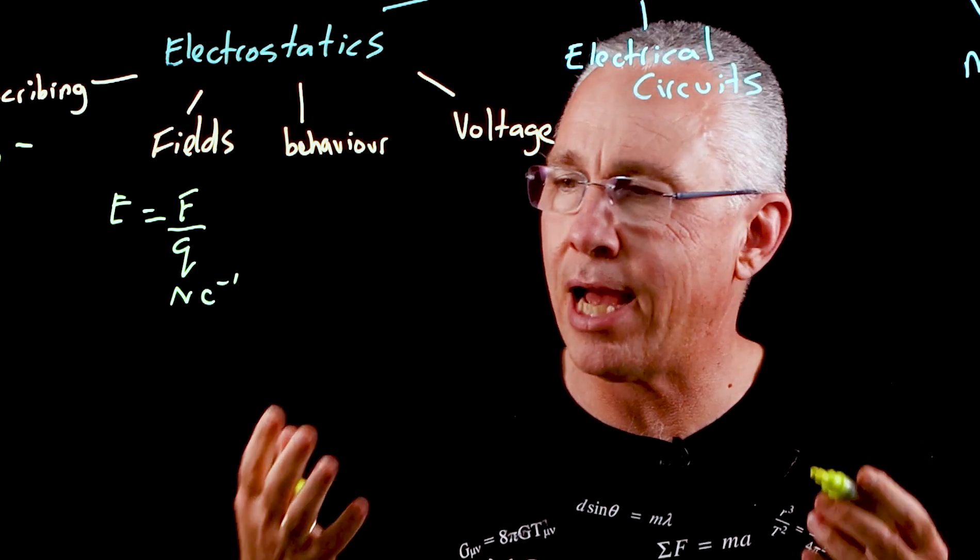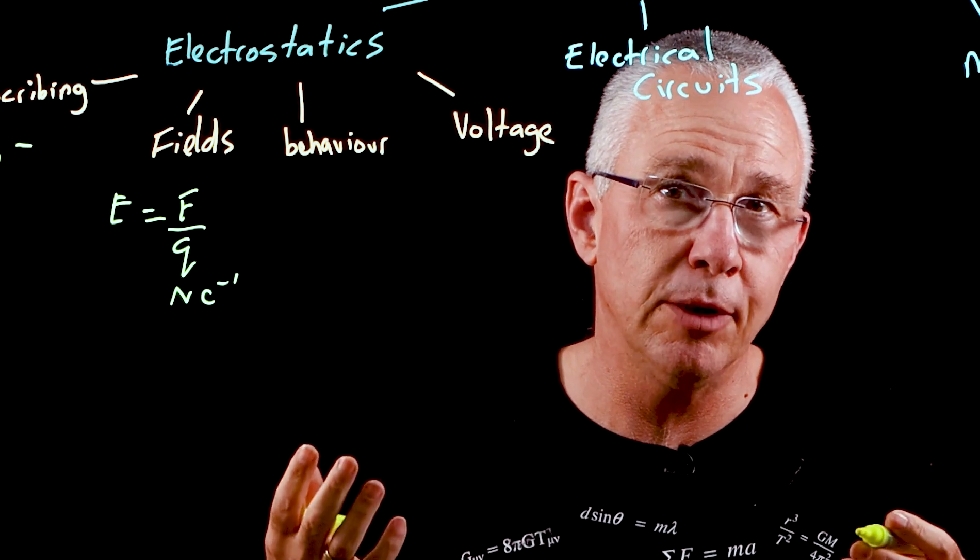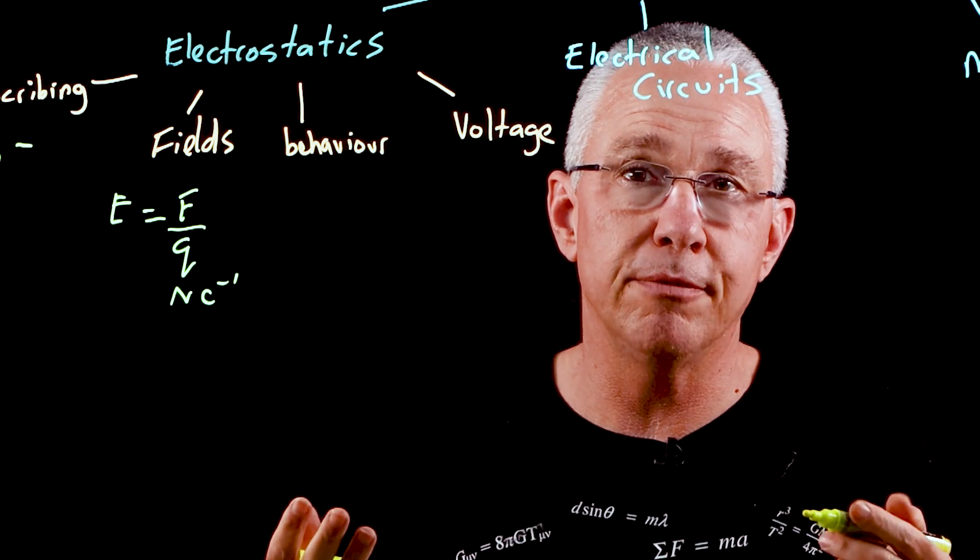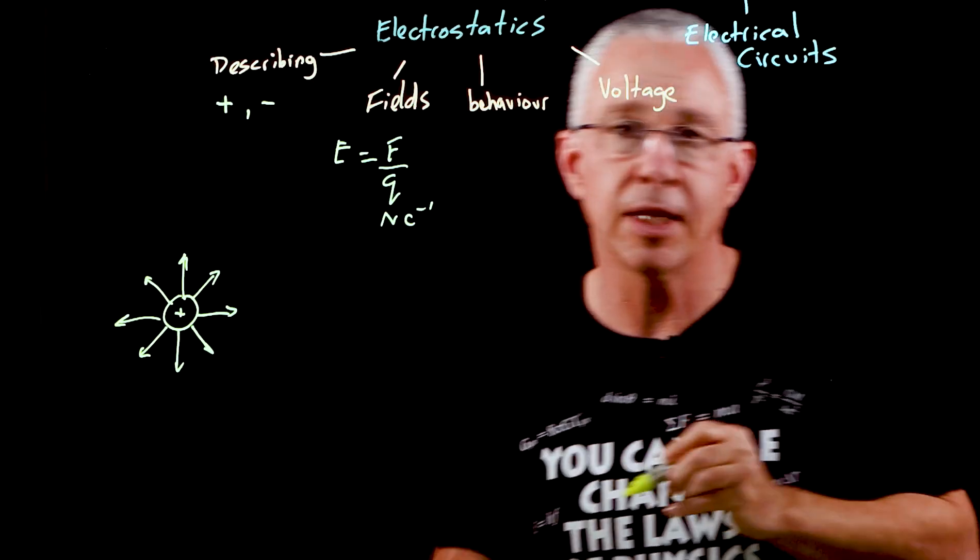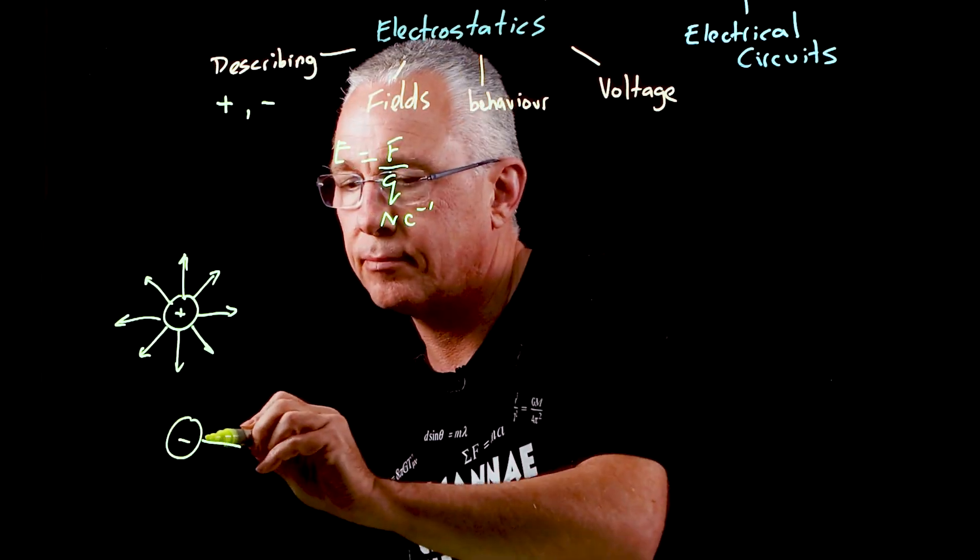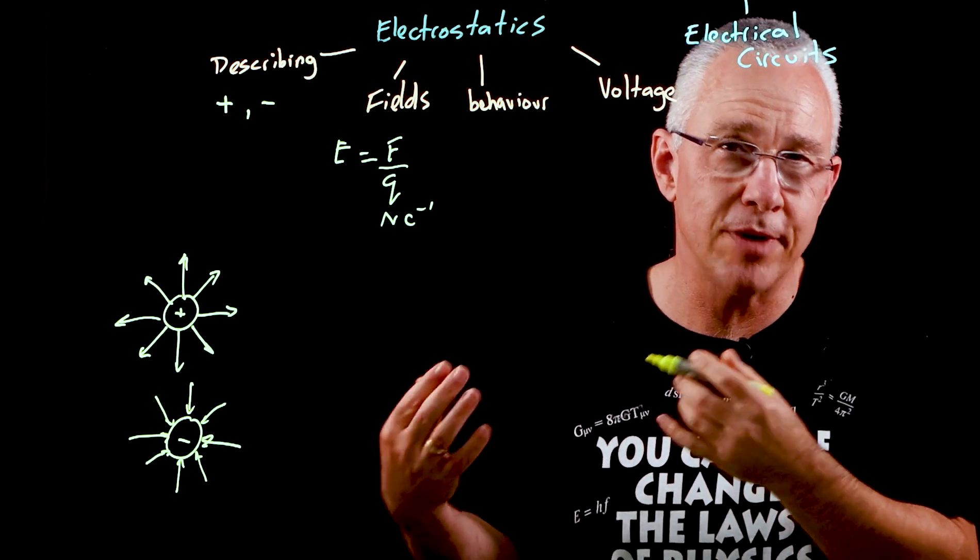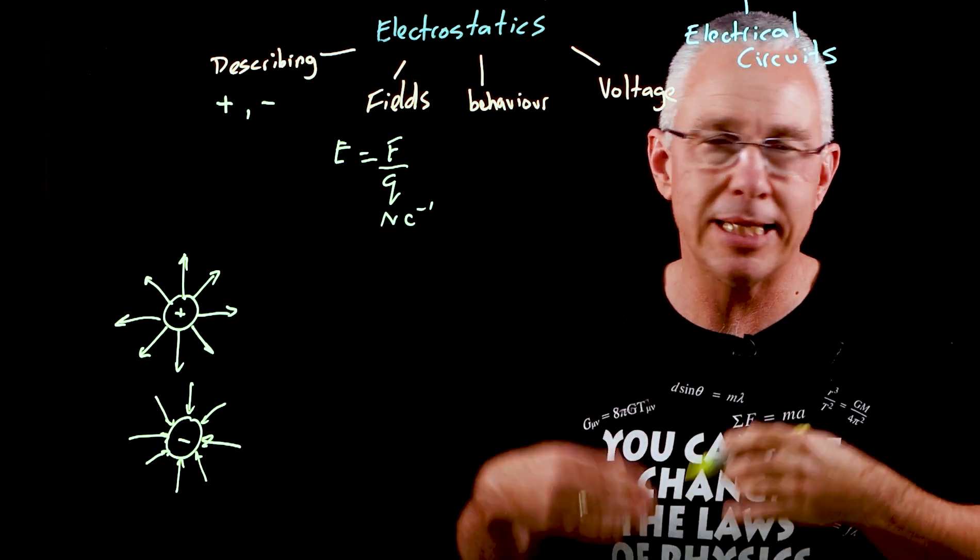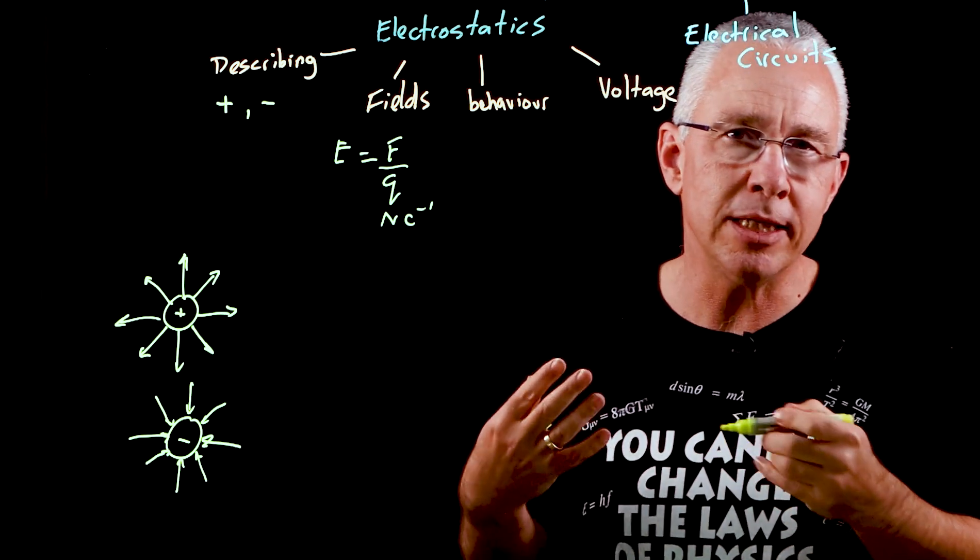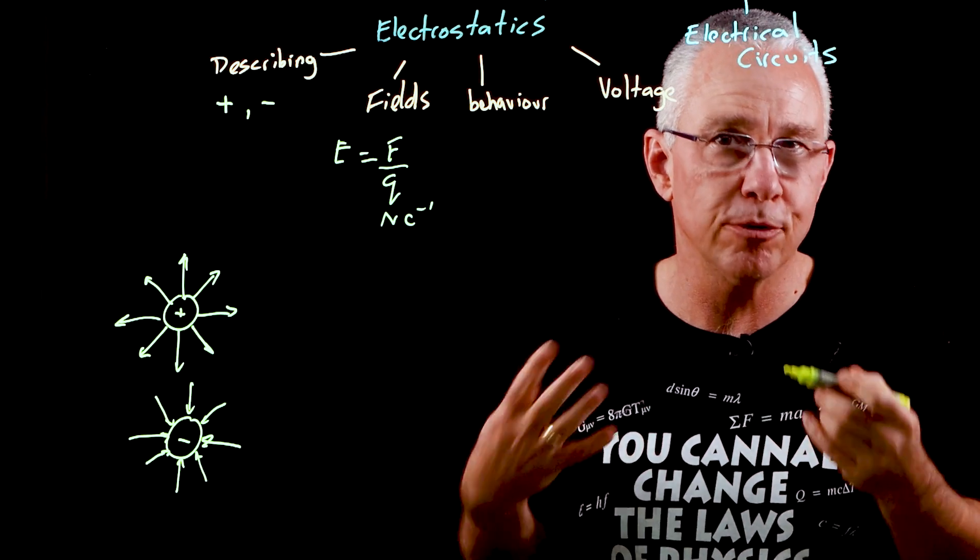The way we represent electric fields is by the use of arrows. You're probably already familiar with them. We can talk about a field around a positive charge, a field around a negative charge, and then a special case where you have an interaction between a positive plate and a negative plate, and you end up getting what we call a uniform electric field.